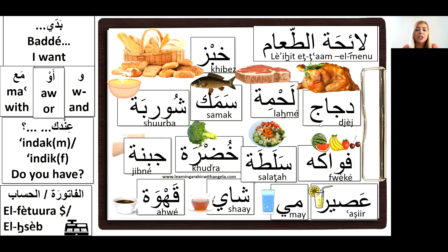Food vocabulary: 'jej' means chicken; 'lahme' is meat — notice the 'ha' sound: 'lahme,' not 'lame'; 'samak' is fish; 'shorba' is soup. You might know 'mashroob' means a drink, or 'shirib' means something that you drink — so 'shorba' means soup and comes from that root as well.